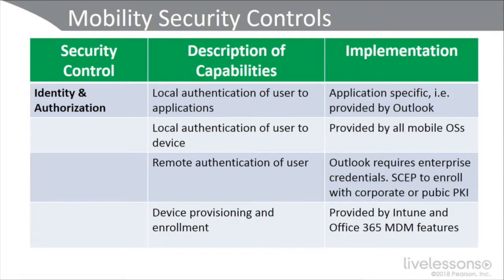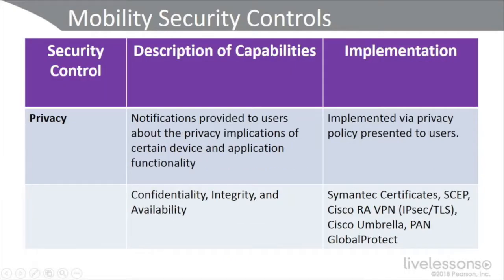Our next NIST security control is identity and authorization, covering local authentication of users to applications, local authentication of the user to the device, remote authentication of the user, and device provisioning and enrollment. Our final security control is privacy, including notifications to users about privacy implications of device and application functionality. We can offer confidentiality, integrity, and availability using Symantec certificates, SCEP registration with a PKI, Cisco's remote access VPN via their mobility client, Cisco Umbrella, or Palo Alto Networks' GlobalProtect solution.